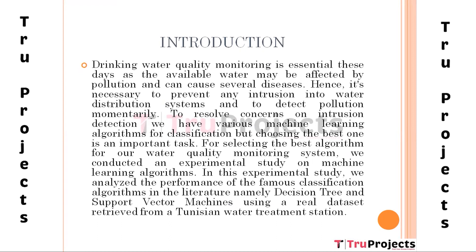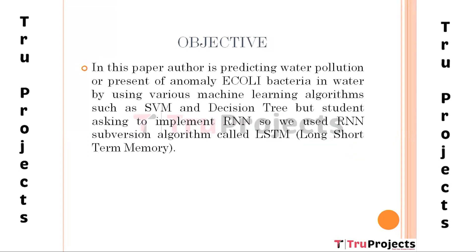Conventional monitoring of water quality involves the manual collection of samples from different points of water distribution networks, which are then sent to specialized laboratories for contamination testing and detection. Sensors are immersed in the water sources to detect various water quality parameters. The main objective of this project is to detect or predict water pollution and prevent anomaly collision of bacteria in water.